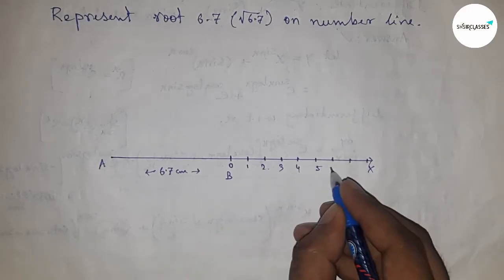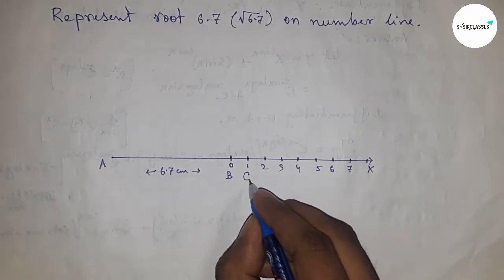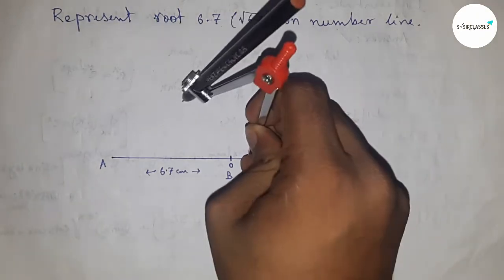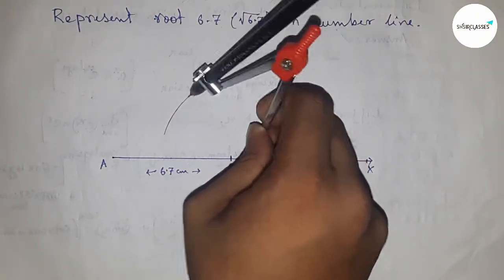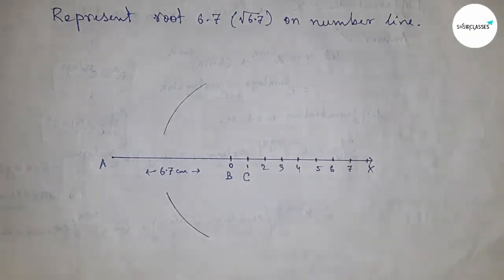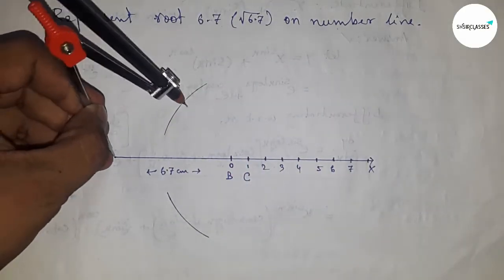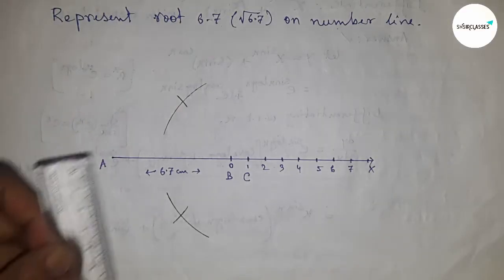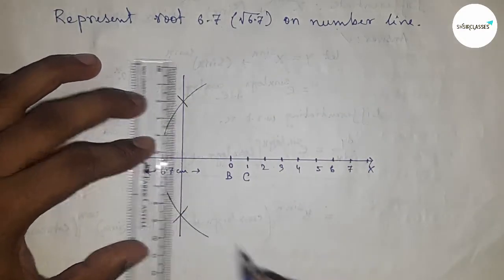Next, bisect the line AC. Bisecting the line AC this way, joining and bisecting at point O, the midpoint.